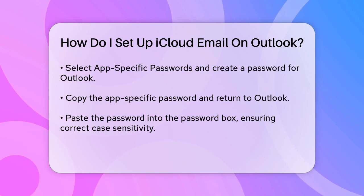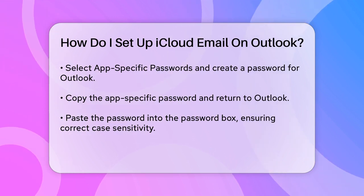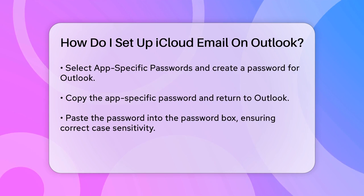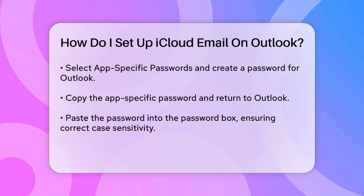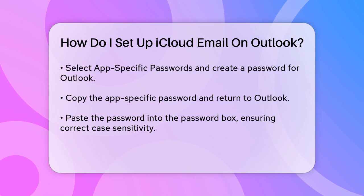For manual setup, you might need to enter the server details. For IMAP, use imap.mail.me.com as the incoming mail server and smtpmail.me.com as the outgoing mail server.